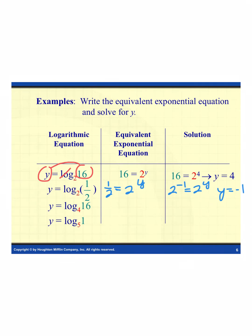So my y value would have to be negative 1. For the next example: my base is 4, the value I'm evaluating is 16, and I have my y value. When I rewrite, my base stays the same, y is my exponent, and it equals the value I'm evaluating. So 16 equals 4 to the y power. Since 16 is the same as 4 squared, my y value ends up being 2.